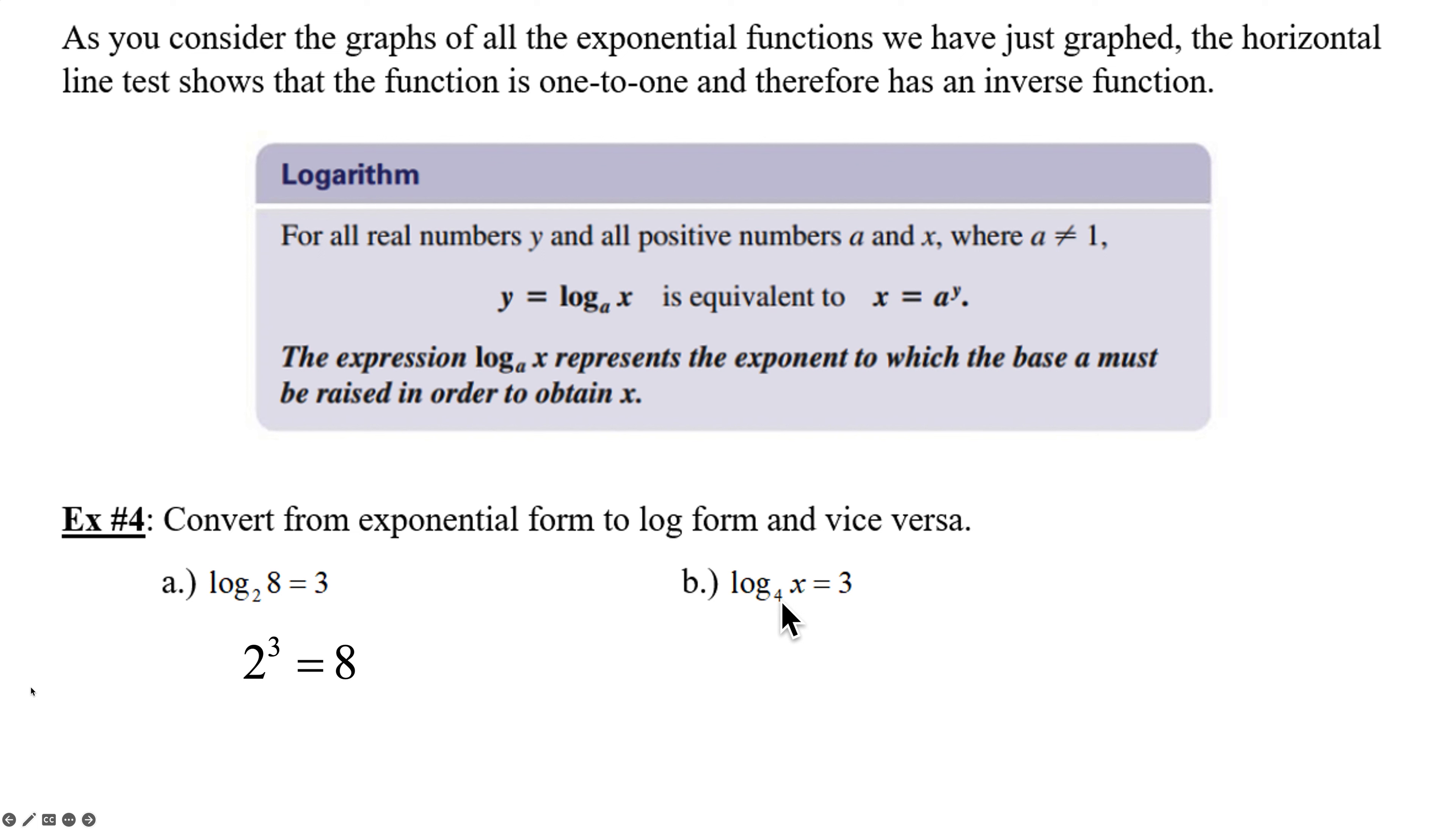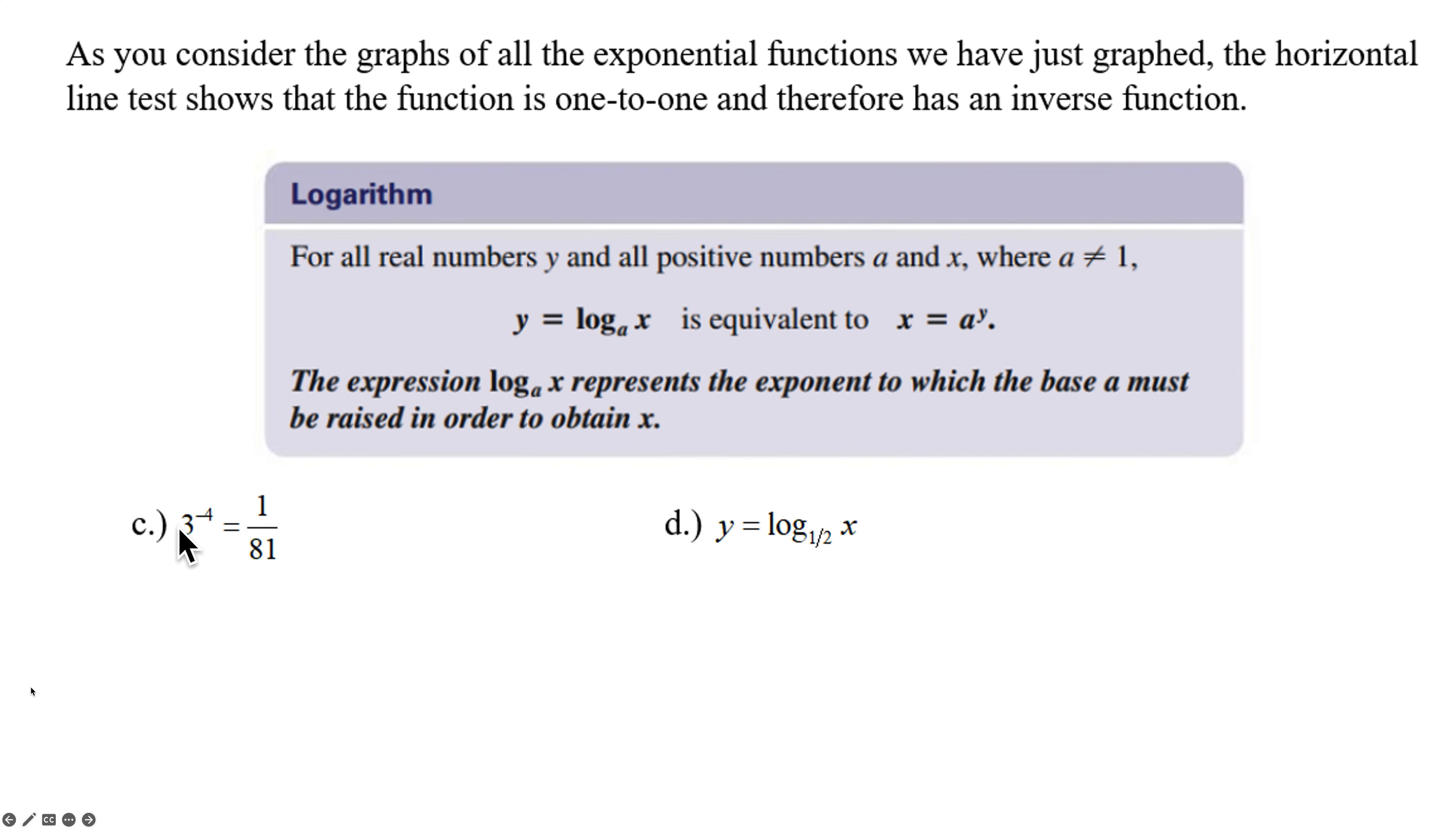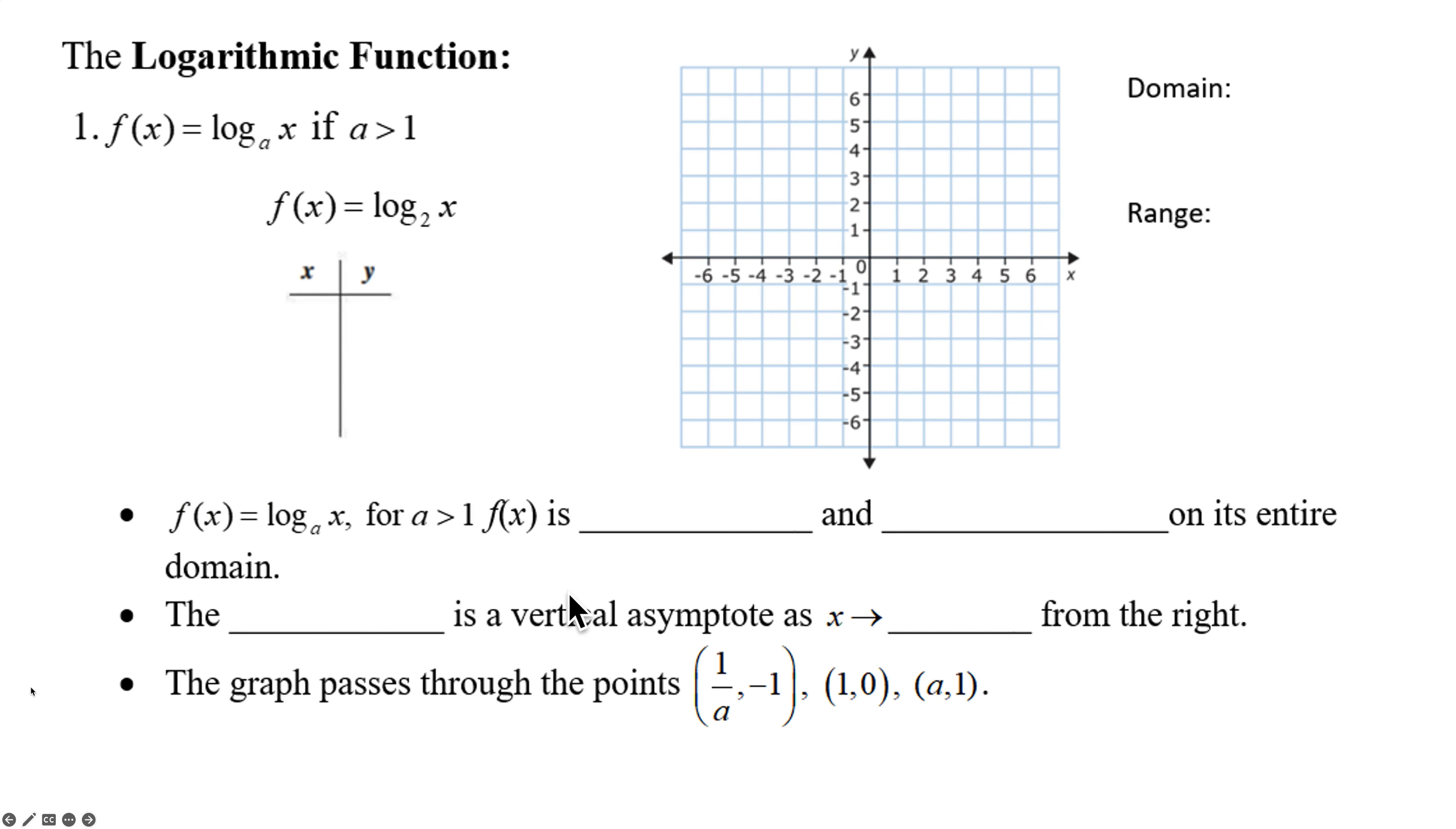For b, base is 4. x to the other side. 3 comes over as the exponent. 4 to the 3rd equals x. Don't simplify it any further. They just wanted to make the change from log to exponential. c, 3 to the negative 4 equals 1/81. The base is 3. So log base 3. Negative 4 goes by itself on the other side of the equal sign. 1 over 81 goes inside the log function. So here's the exponential notation being changed into a log. Base 1 half. x to the other side. y you come over as the exponent. So practice that quite a bit. It's definitely going to be on the test. Something you need to know.